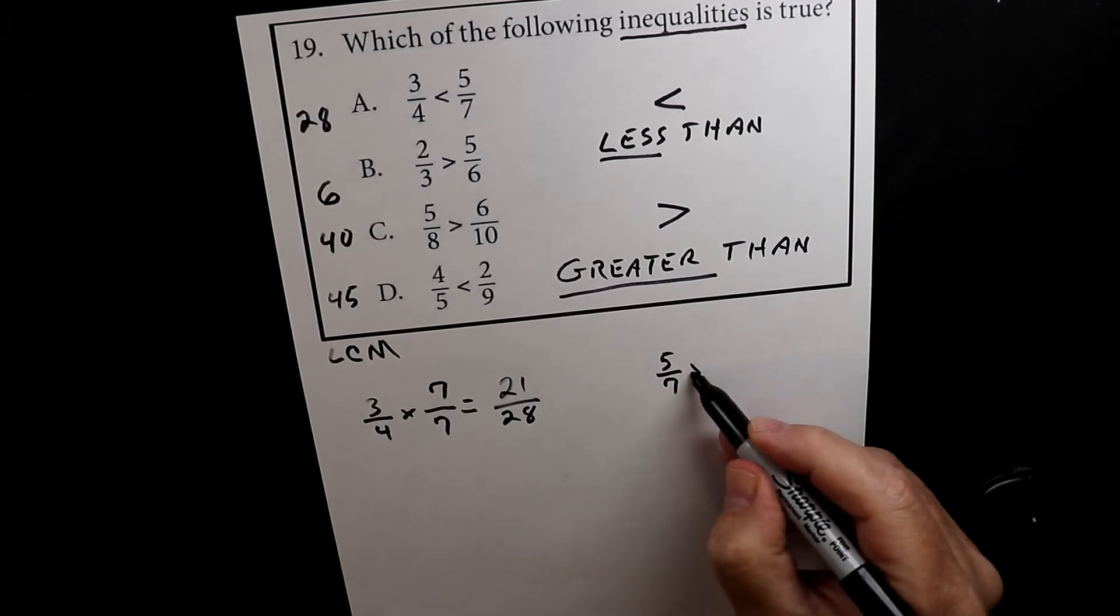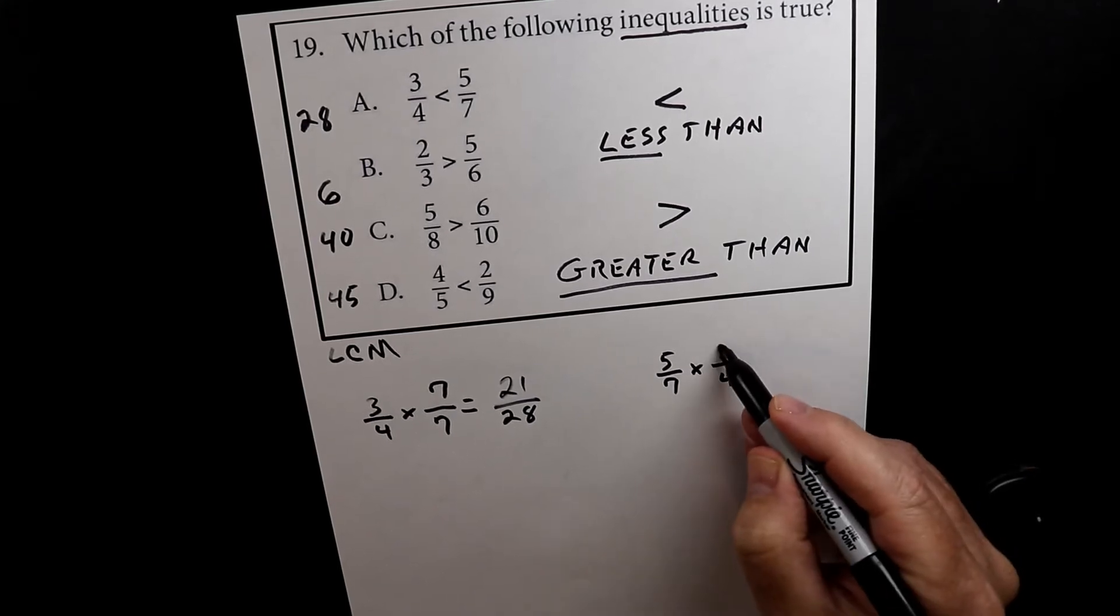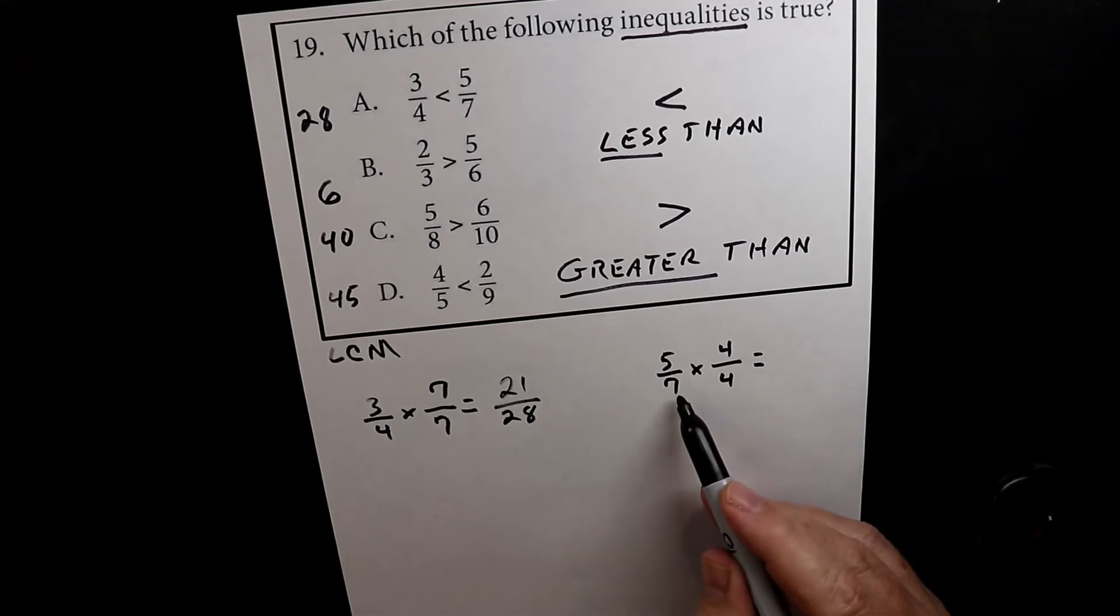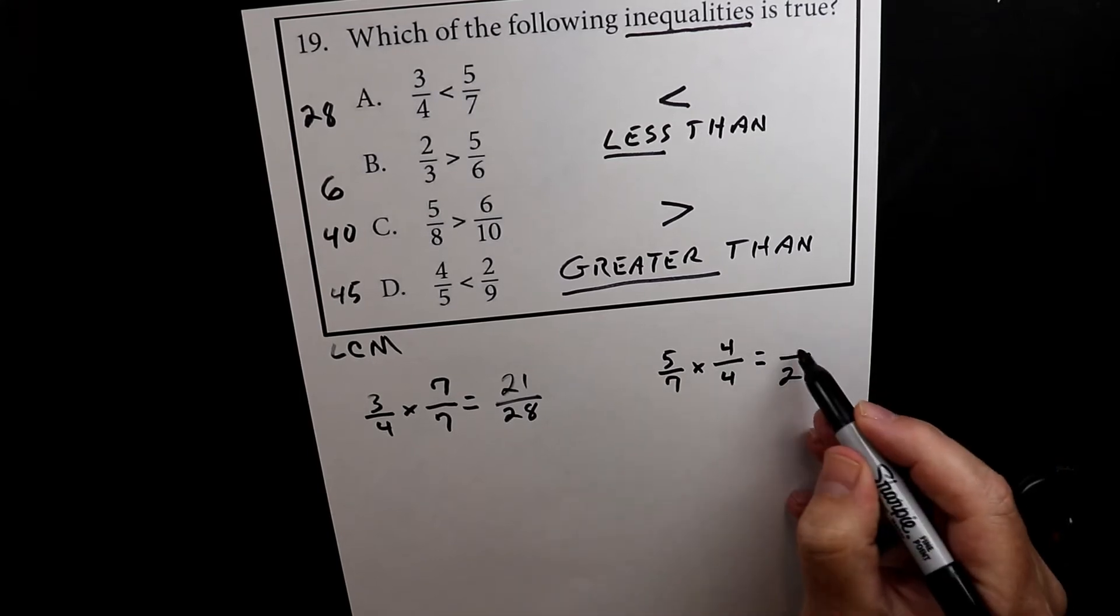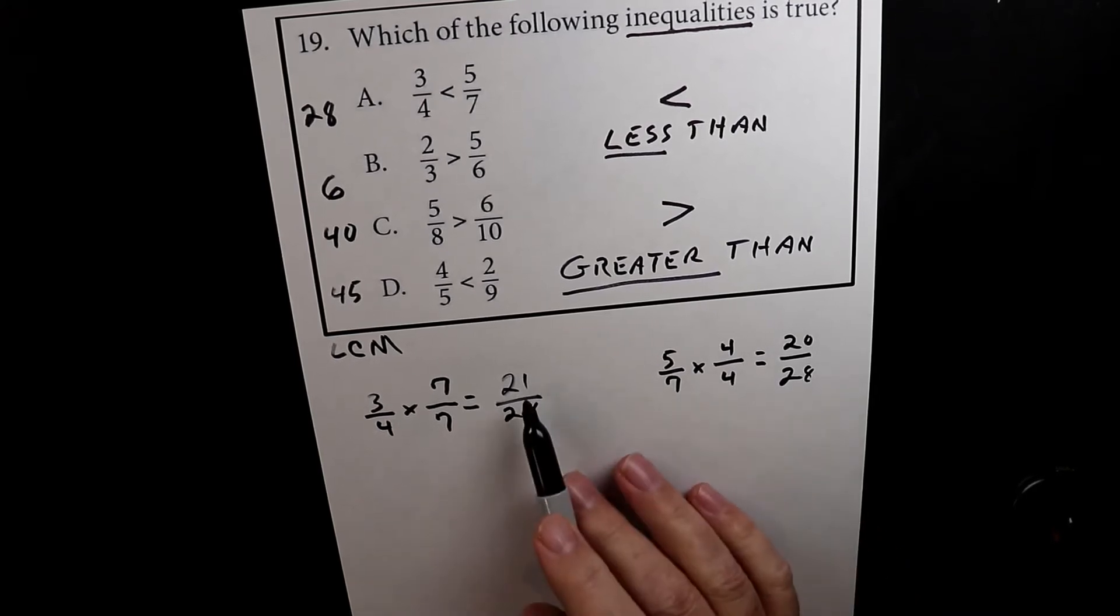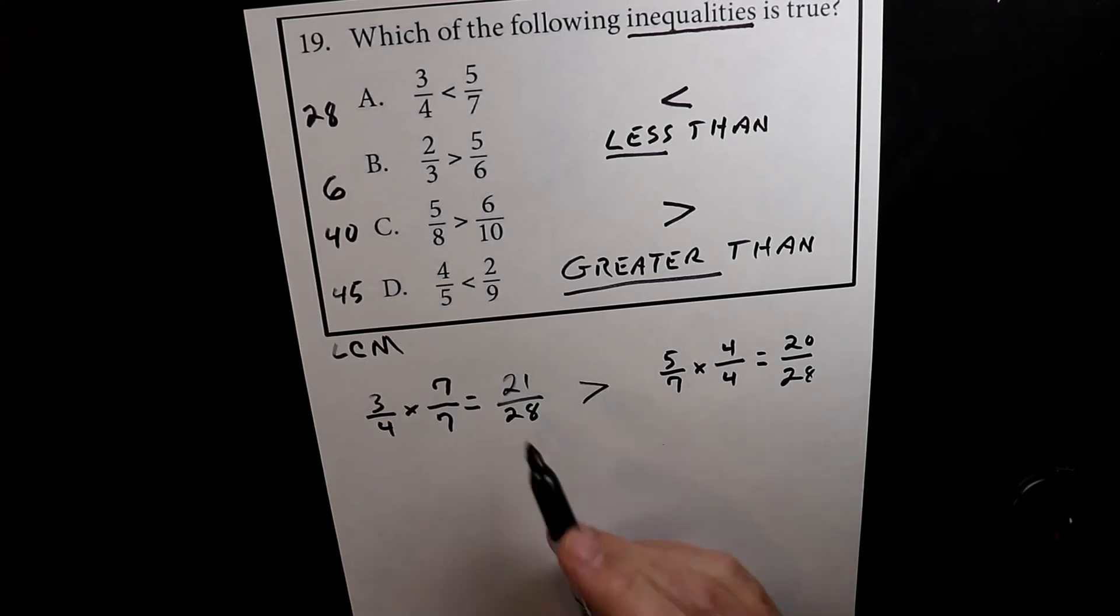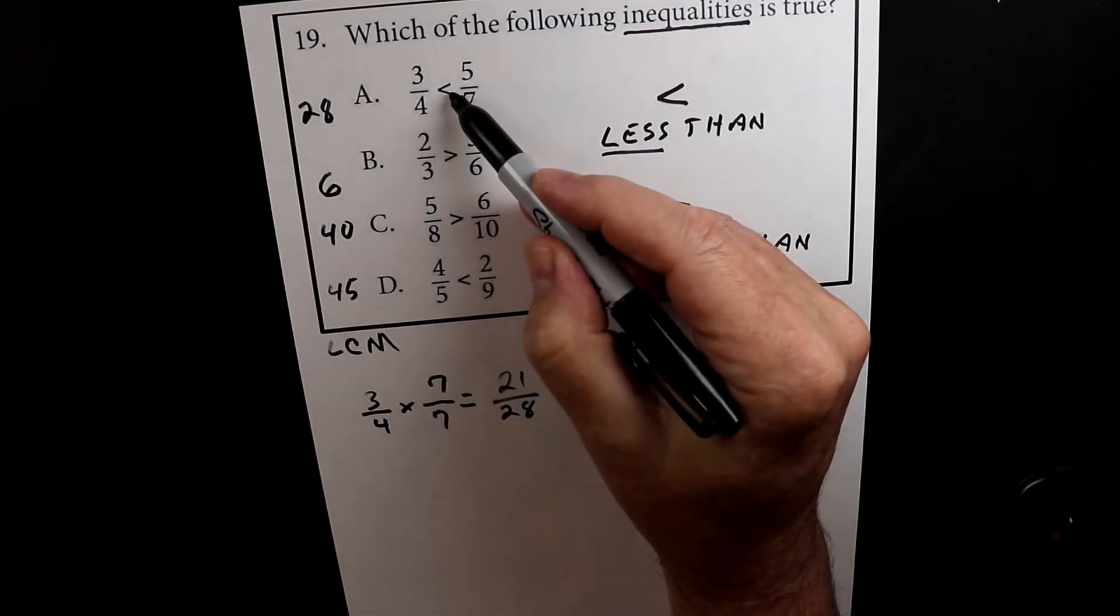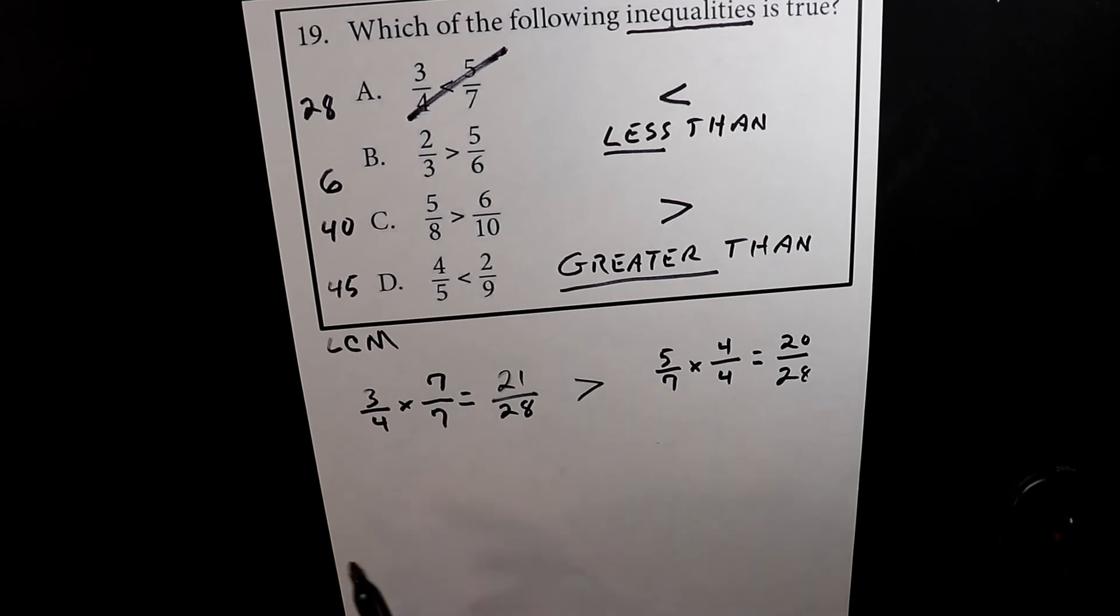Over on this side, we have to multiply the 7 by 4. If we do the bottom by 4, we also have to do the top by 4, because 4 over 4 is 1. And 7 times 4 is 28, 5 times 4 is 20. So we look at this. 21 is bigger than 20, so this one won't work. So 21 over 28 is greater than 20 over 28. So this one here can't be right.